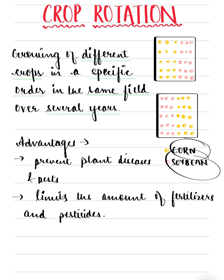Now the disadvantage of crop rotation. It is difficult to specify which crops must be planted in the field. Their implementation is also difficult because if not done properly, it may lead to more harm than good.